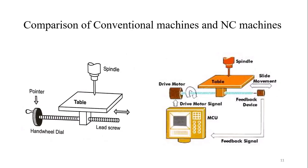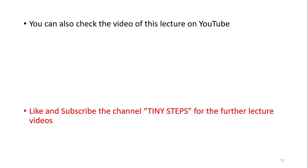I am giving you some work to do, which we will discuss in the next class. What are the comparisons between conventional machines and NC machines? As we discussed, conventional machines include the lathe, drilling machine, milling machine, and slotter machine. You need to find out the differences between conventional machines and NC machines. You can discuss with me — this is a homework for you. You can check my videos on the Tiny Step channel and please subscribe for more videos.